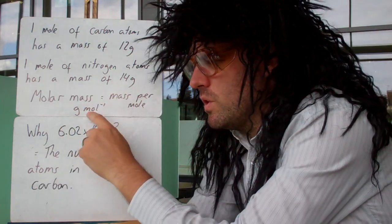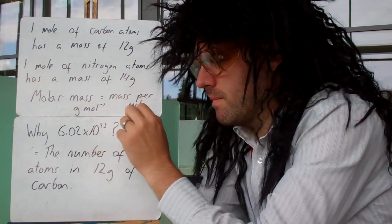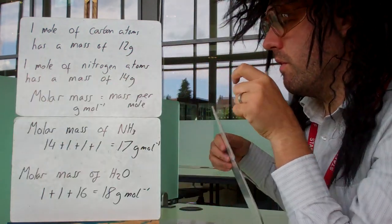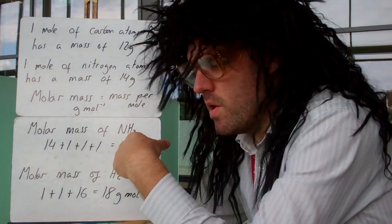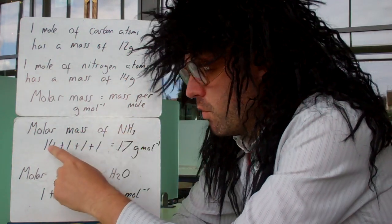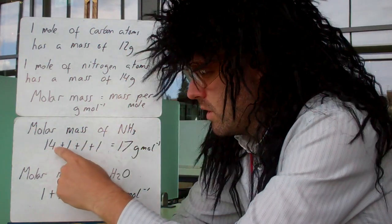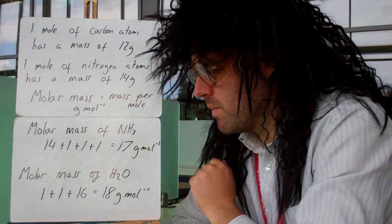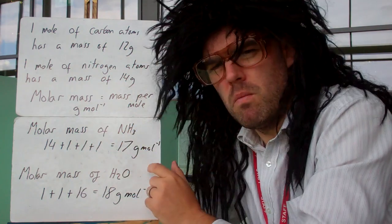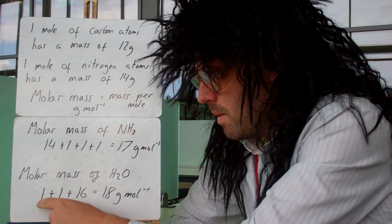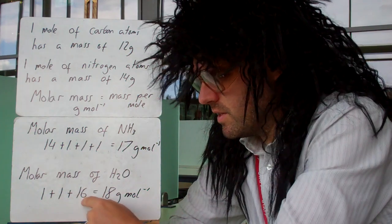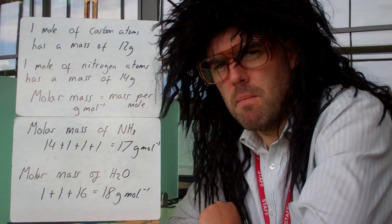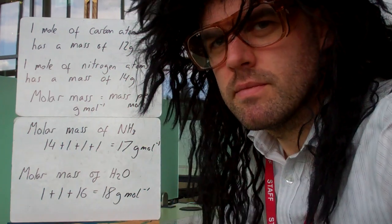Molar mass is the mass per mole, and it has units of grams per mole. So if you want to know the molar mass of ammonia, NH3, it would be 14 for nitrogen, plus 1 plus 1 plus 1 for each hydrogen, which comes to 17 grams per mole. And the molar mass of H2O would be 1 plus 1 for each hydrogen and 16 for oxygen, giving you 18 grams per mole.